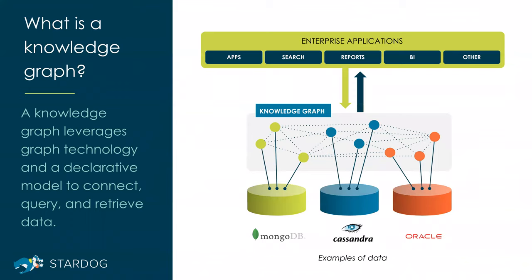Let's start with a quick motivation. RDF is the core data modeling language used for knowledge graphs. The main use case we see for knowledge graphs is to connect disparate data sources. Knowledge graphs make it easier to unify data from different schemas due to the flexibility they provide.